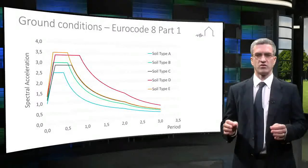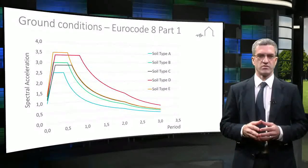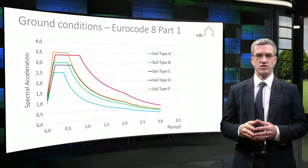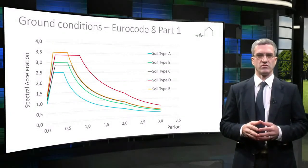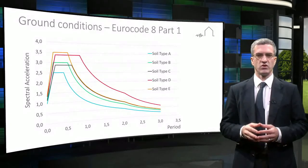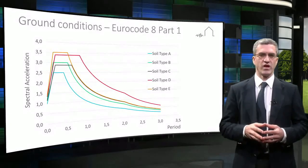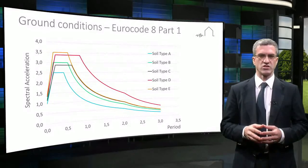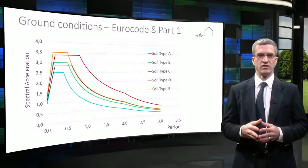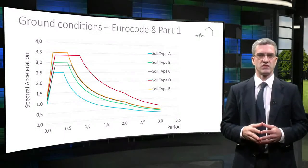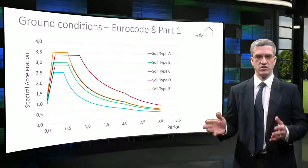Eurocode 8 Part 1 provides five basic seismic ground types A to E, for which tabulated parameters are provided to assist the derivation of the elastic surface spectra. Eurocode 8 requires special investigations for site classes S1 and S2. In the graph you can see the spectra given in Eurocode 8 for ground types A to E.